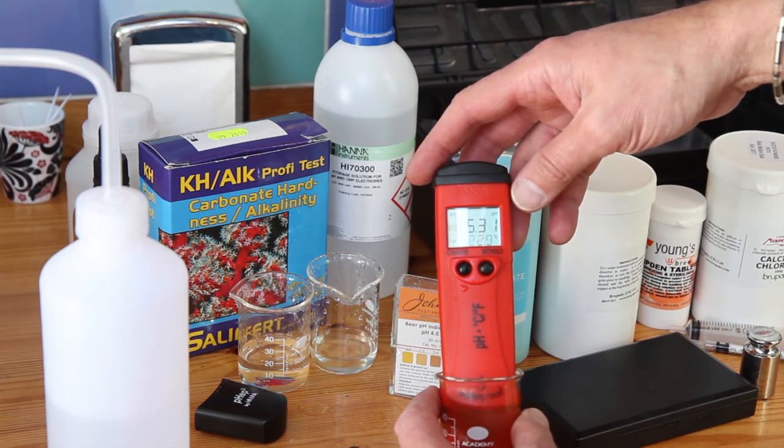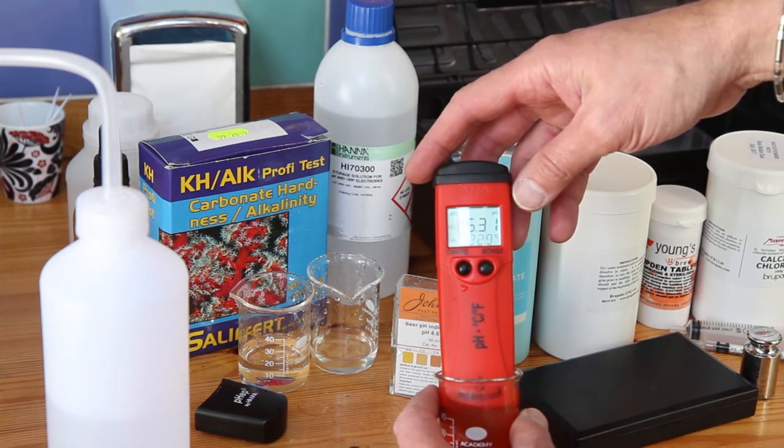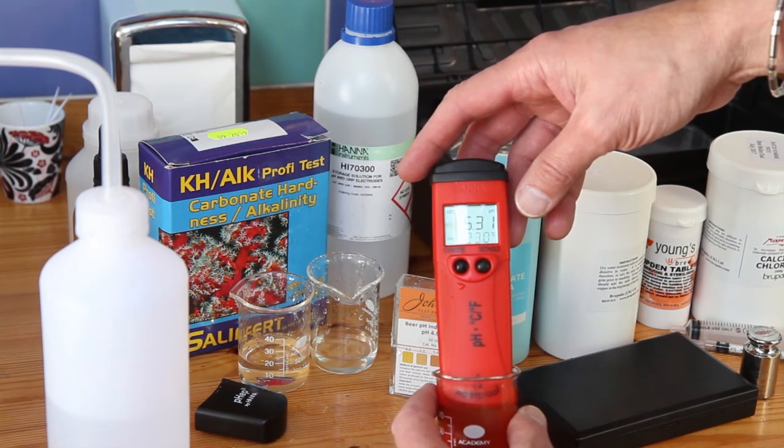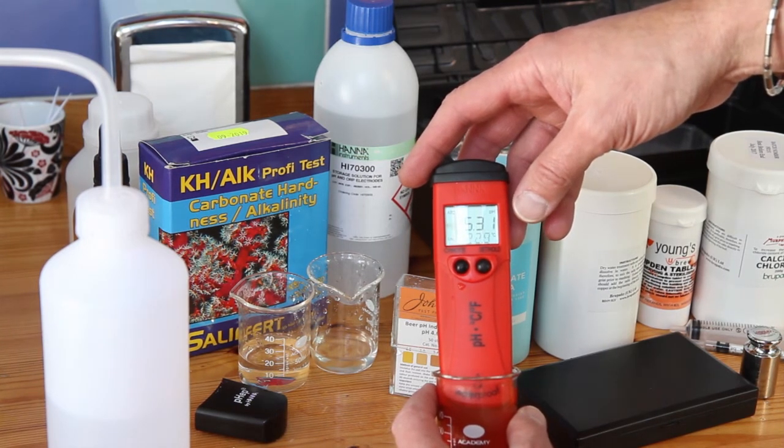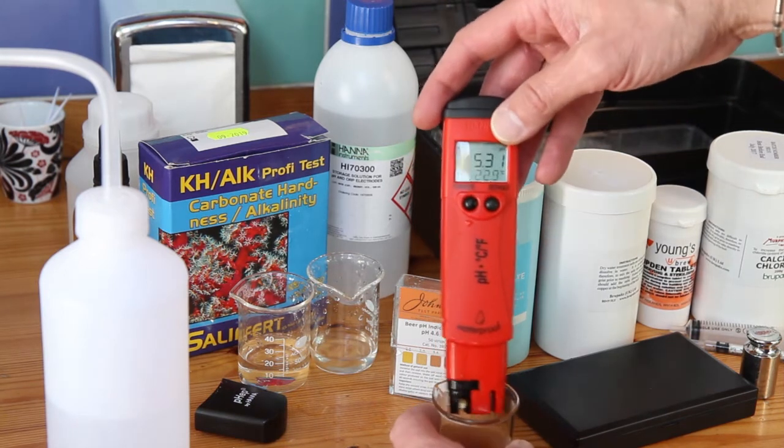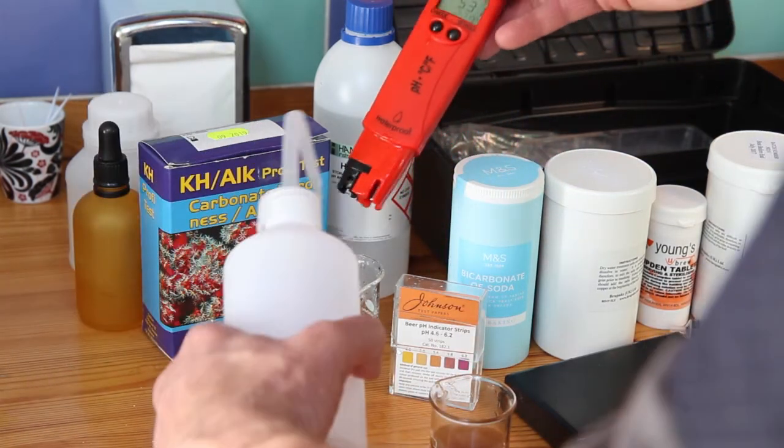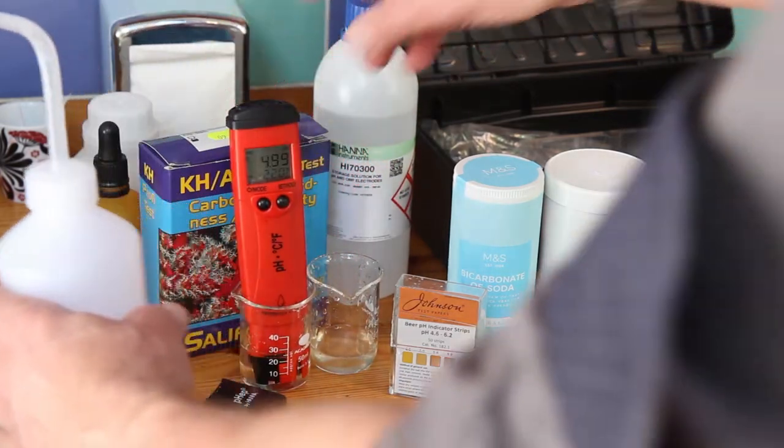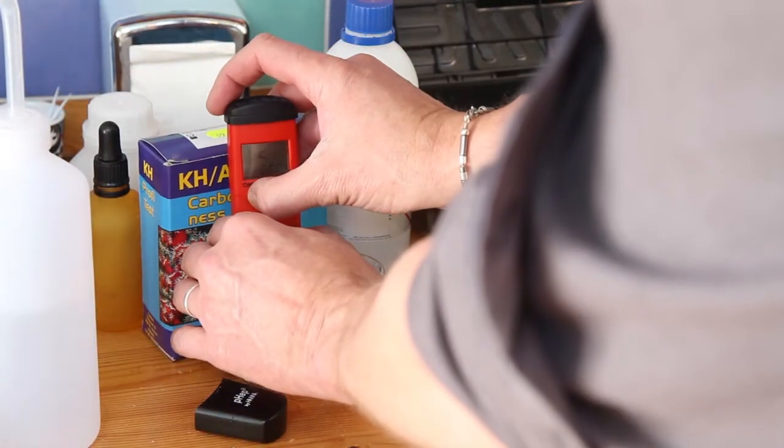Wait for the little clock symbol to go off so it is finished measuring. There, 5.31. 5.31 within a hundredth of a pH meter, bang on what Brewing water said. So I have got no complaints about that. Rinse off the electrode. Back into a storage solution until I need it next time. Turn it off.